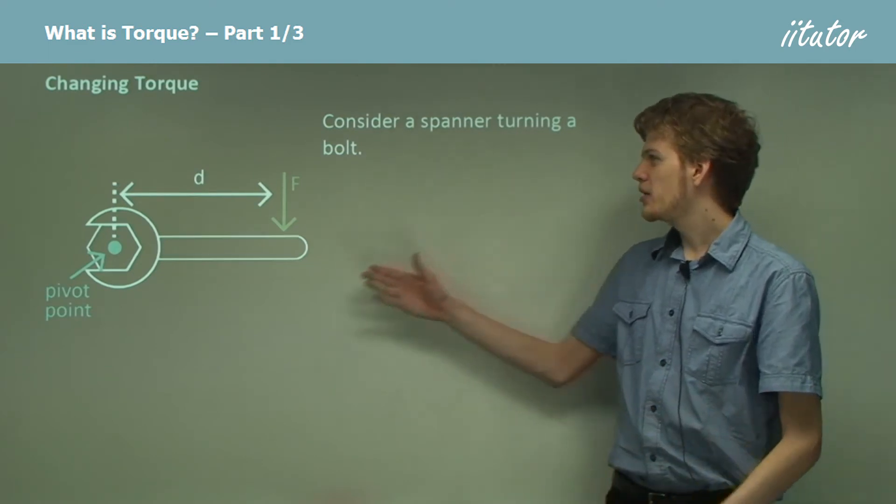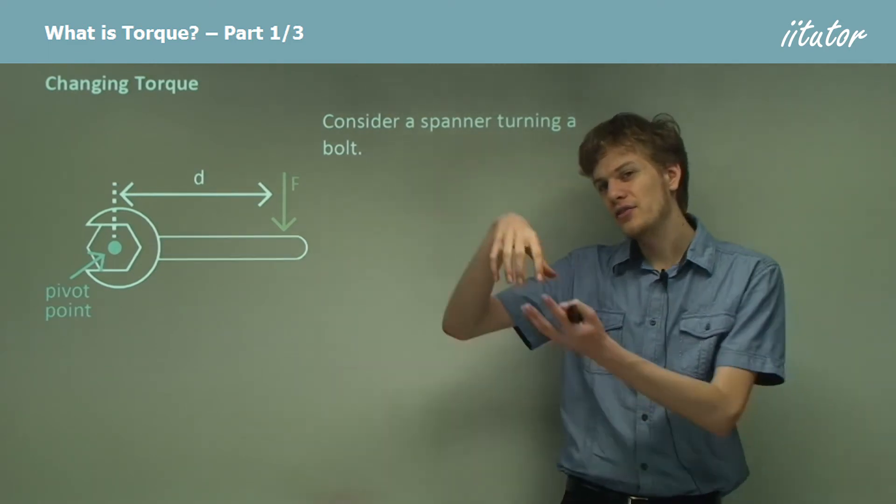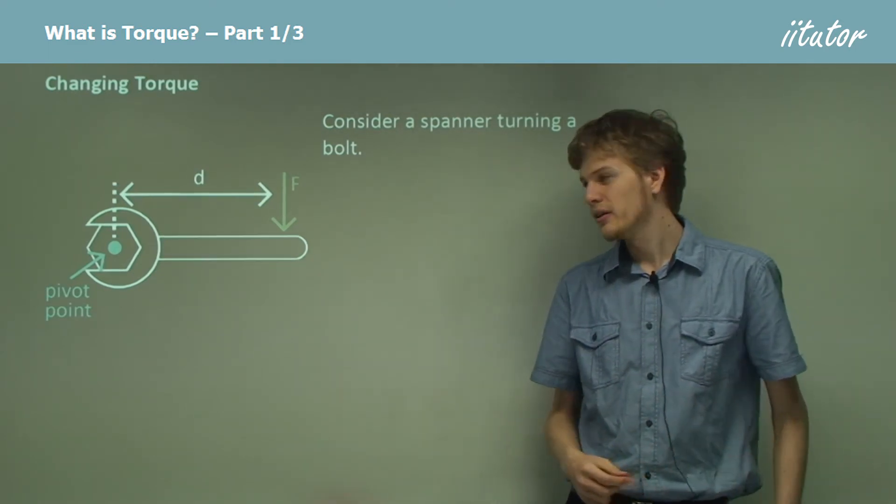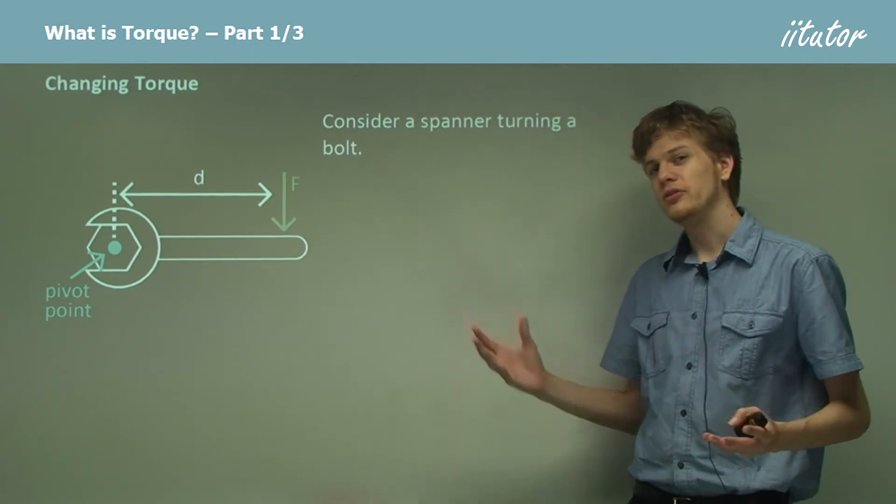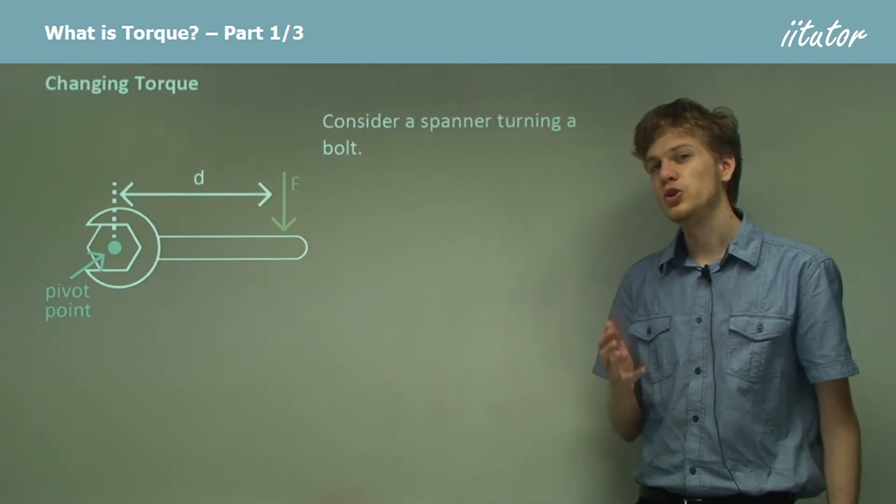So we can imagine a spanner turning a bolt. This is the thing that turns. So we can use it as a fantastic example to understand torque.